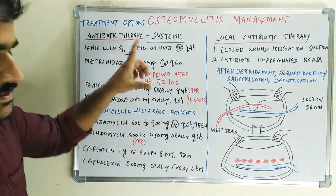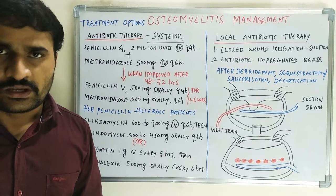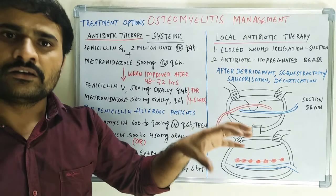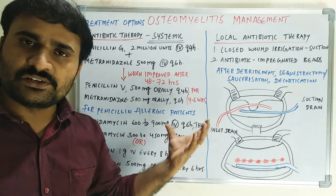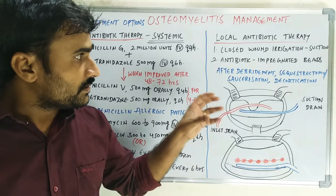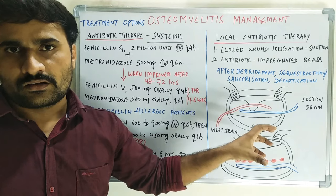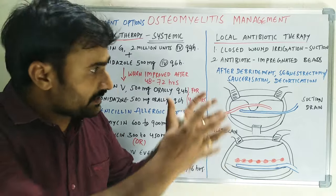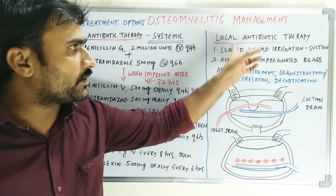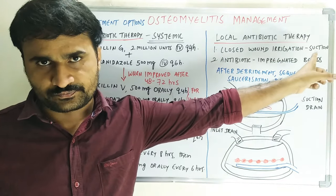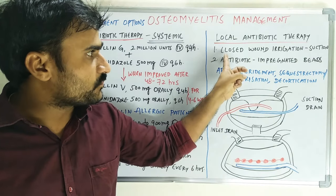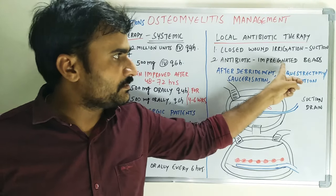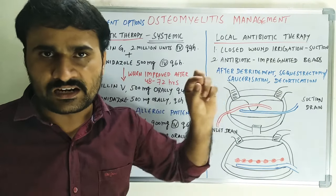Systemic antibiotic therapy is very important and you have to remember the dosages. Coming to local antibiotic therapy: in some chronic cases, or when systemic drug administration is not effective or does not achieve sufficient local concentration at the infected site, we go for local antibiotic therapy. There are two methods: the closed wound irrigation and suction method, and antibiotic-impregnated acrylic beads.